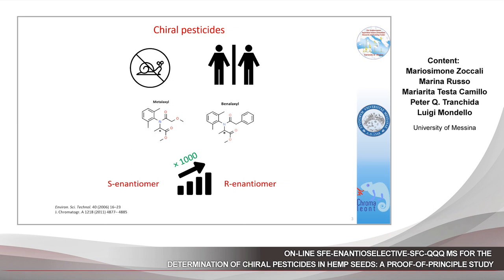For example, metalaxil and benalaxil are two chiral fungicides. However, for both substances, the R enantiomer shows an activity almost 1000 times higher than the S enantiomer. Moreover, the degradation of pesticide enantiomers in the environment can also be enantiospecific.